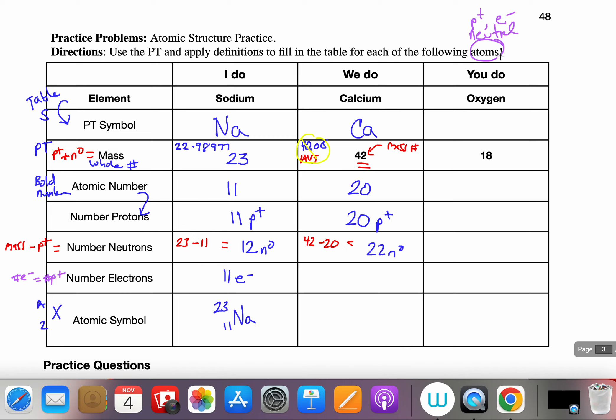Once again this is a calcium atom and if it's an atom it is neutral. So my number of electrons is equal to my number of protons. So if I have 20 positive charges or 20 protons, then I understand that I also have 20 electrons or 20 negative charges.